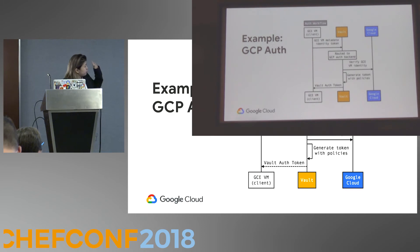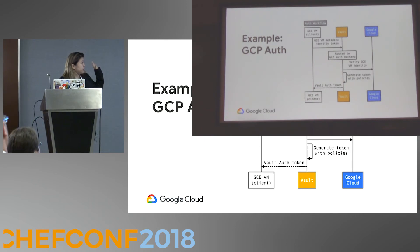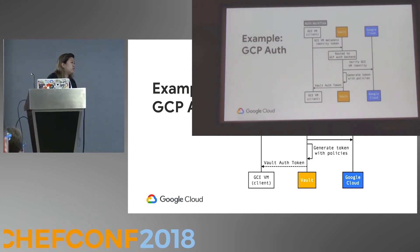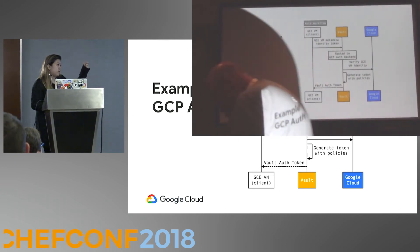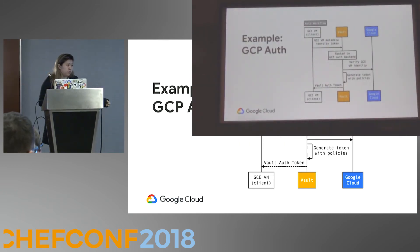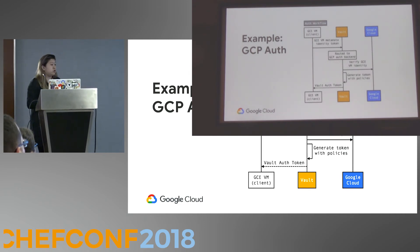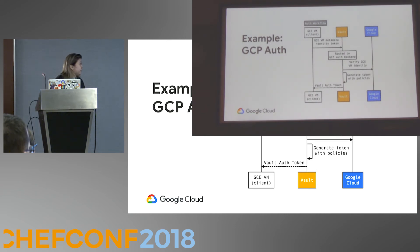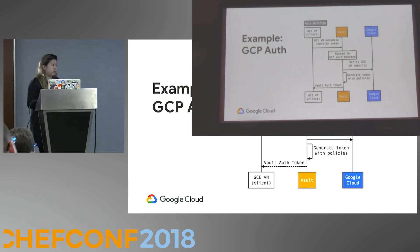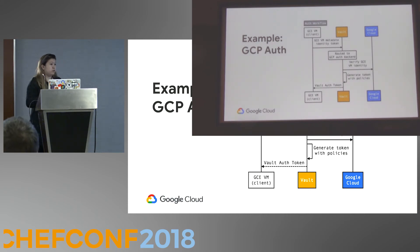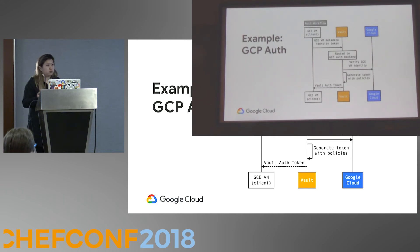Each GCP VM has a metadata token associated with it — you don't need additional credentials to access it from within a GCP VM. As soon as it starts up, you can grab it from the metadata server and send it to Vault. Vault verifies it with Google, because it's a Google-signed JWT token, and if it's valid, Vault returns an auth token. This lets your VMs access secrets without needing additional credential files, which is really useful for automated workflows where you're spinning up VMs.